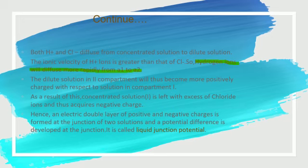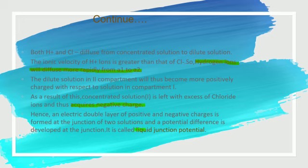The dilute solution in compartment 2 will become more positively charged because hydrogen ions move faster — their number of positive ions will be more. As a result, the concentrated solution in compartment 1 is left with an excess of chloride ions and thus acquires a negative charge. Hence an electric double layer of positive and negative charges is formed at the junction of the two solutions, and a potential difference is developed at the junction. This is called liquid junction potential.